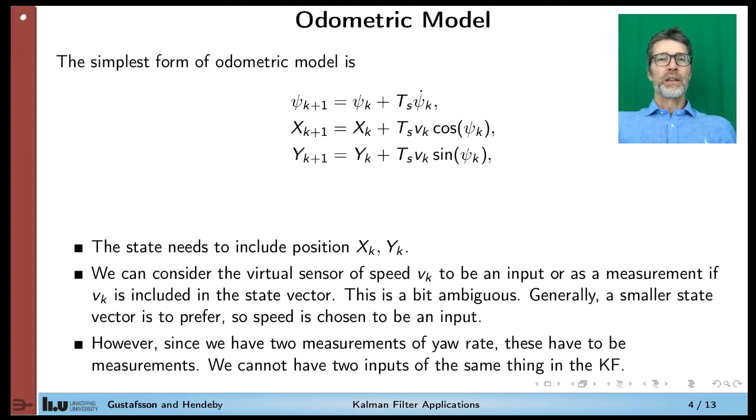We might have the speed v here as a state. In that case, the wheel speeds will provide another measurement to the Kalman filter. But in many aspects, it's more convenient to consider the speed to be an input to the state-space model. In that way, we can have less states in the state vector, which is usually to prefer. Since we have two different measurements of yaw rate, we cannot consider the psi dot here as an input. There is no way to include information from two different measurements as one input to the model. So that is why you consider the psi dot to be a measurement, and a state.